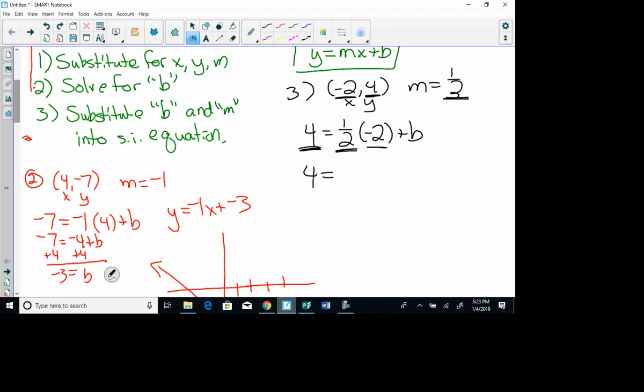4 equals, let's see, what's half of negative 2? Oh, it's negative 1 plus b. Add 1 to each side. B equals 5. Last step, substitute b and m into the slope-intercept equation. y equals 1 half x plus 5.